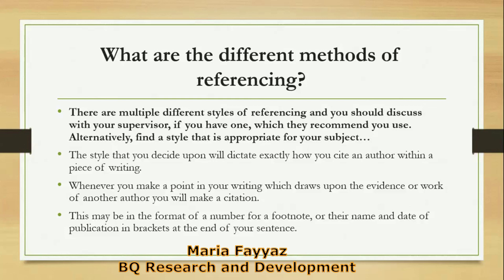For example, you have written a quote: 'CSR is the study of the social environment and political environment of a business.' After this line, you write the citation: Colin, 2019. This means Colin is the writer and his publication is from 2019.